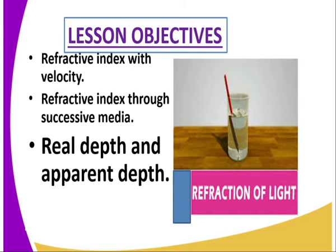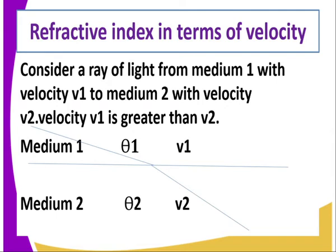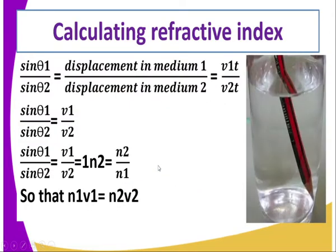So refraction of light — from the diagram, this is to help us recall that refraction is the bending of light when it travels from one medium to the other. So, refractive index in terms of velocity: consider a ray of light through medium 1 with a velocity V1 to medium 2 with a velocity V2, where V1 is greater than V2. At the interface — the boundary between the two mediums — the light ray bends. So how do we get the refractive index?